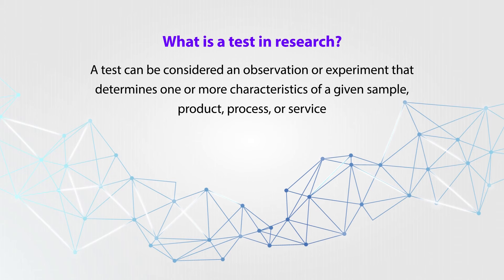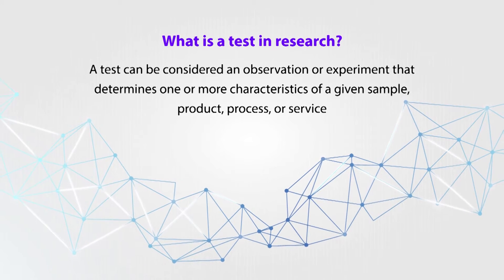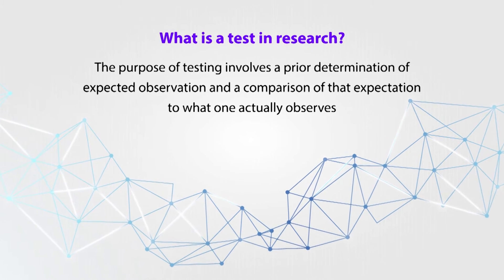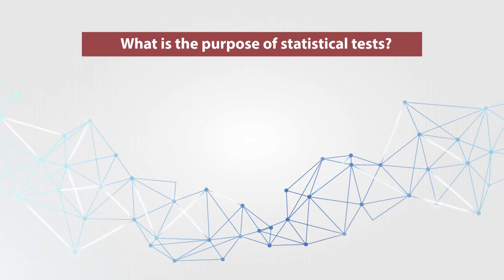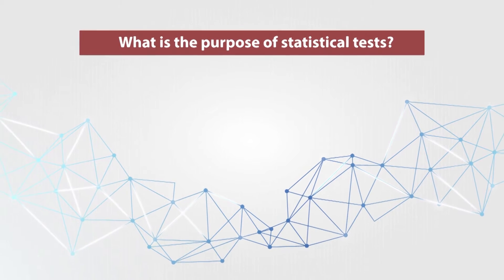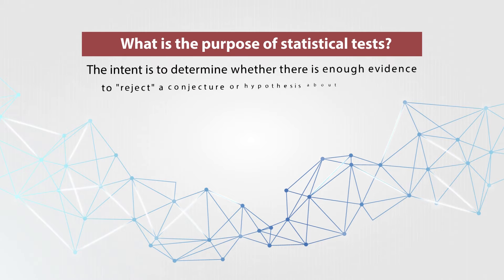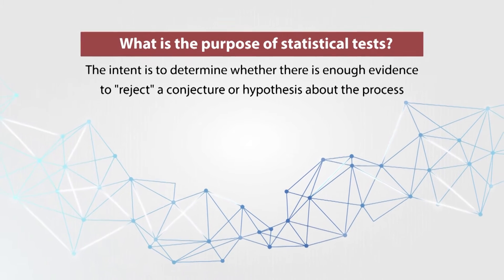A test can be considered an observation or experiment that determines one or more characteristics of a given sample, product, process, or service. The purpose of testing involves a prior determination of expected observation and a comparison of that expectation to what one actually observes. A statistical test provides a mechanism for making quantitative decisions about a process or processes. The intent is to determine whether there is enough evidence to reject a conjecture or hypothesis about the process.